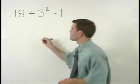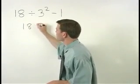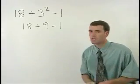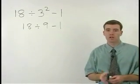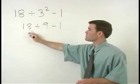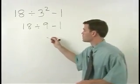So our next step reads 18 divided by 9 minus 1. Since multiplication and division come before addition and subtraction, the next thing we do is divide 18 by 9, which gives us 2.